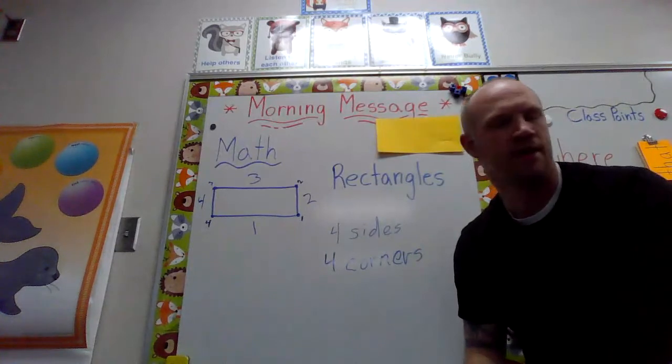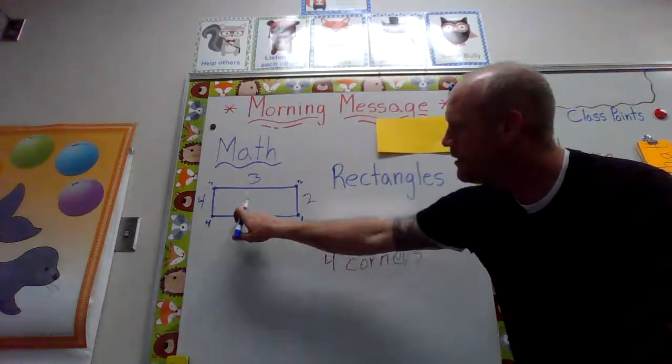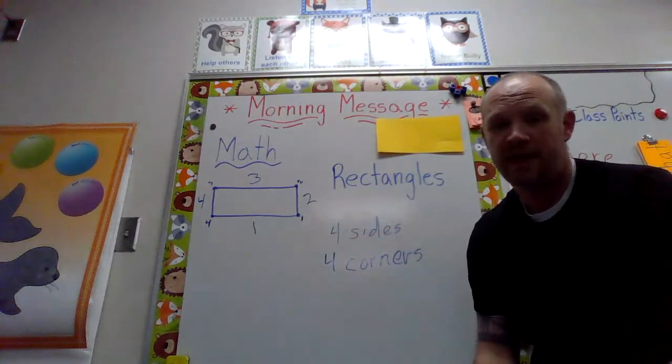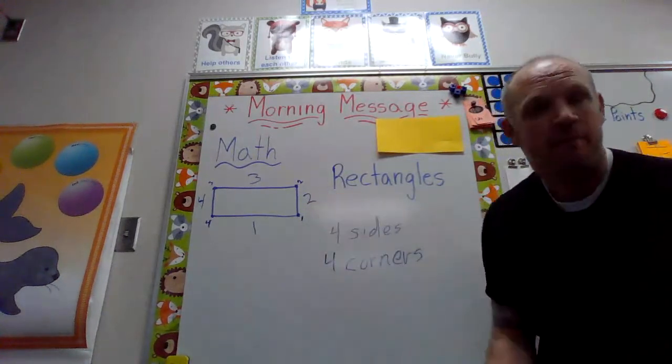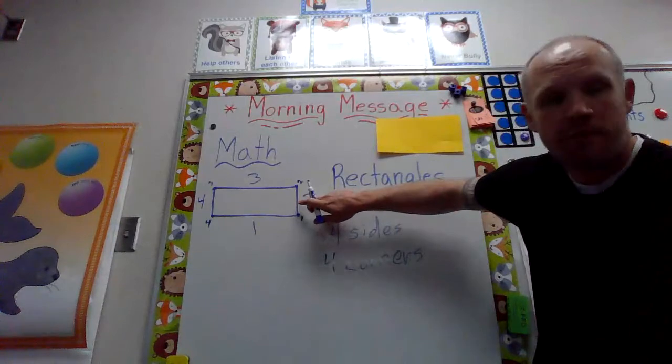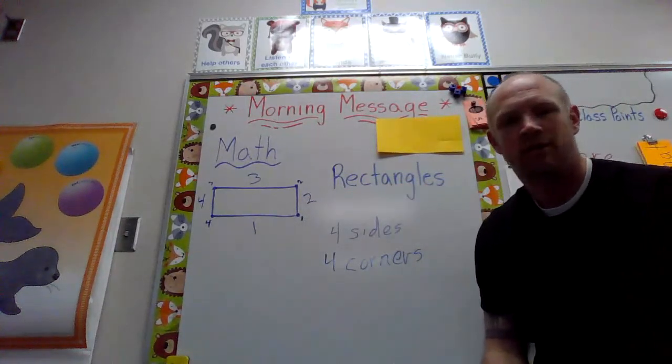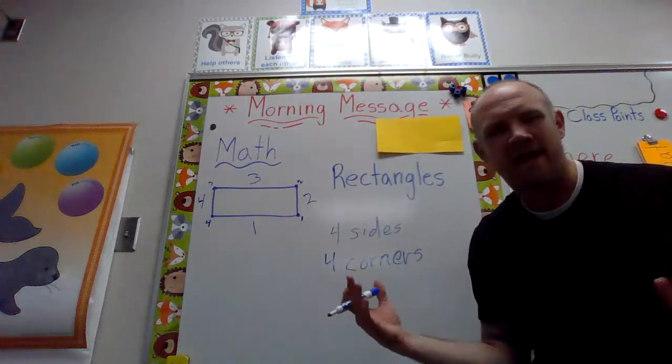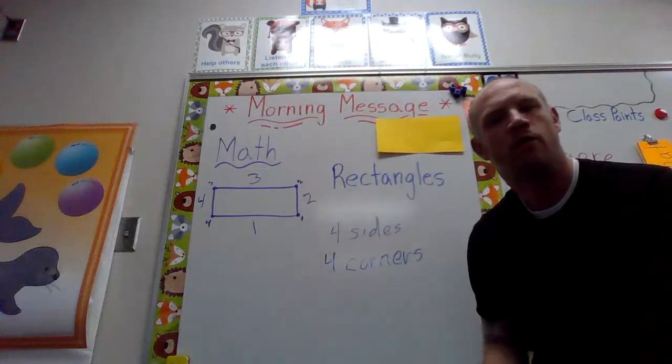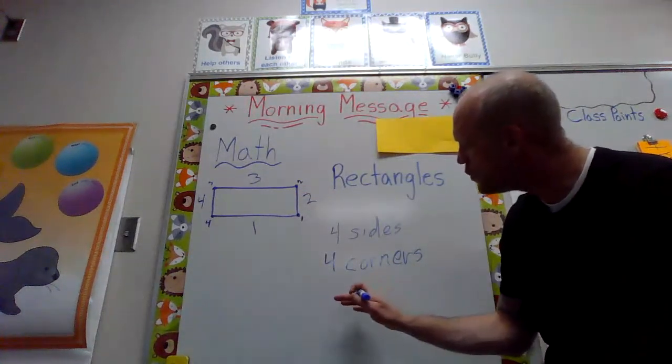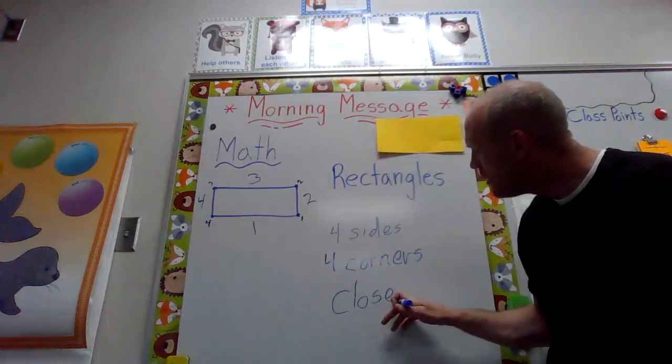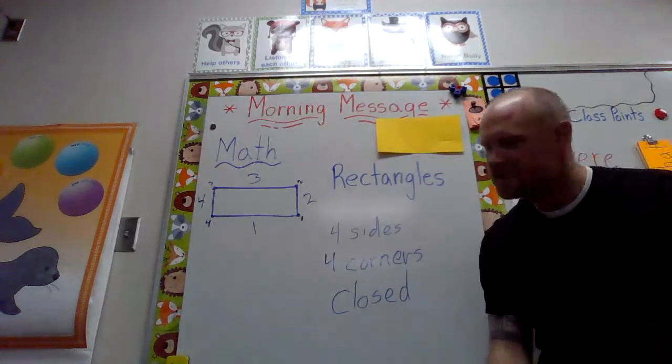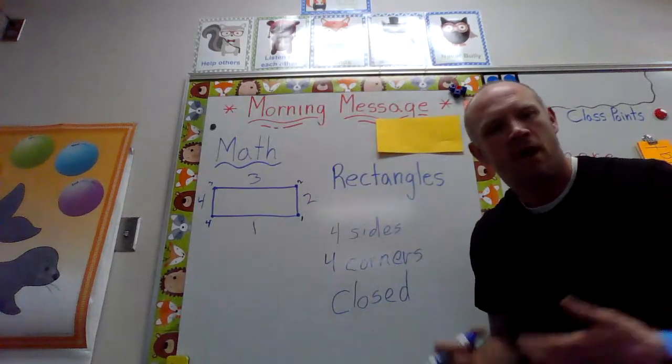Now just like our circle and our square and our triangle, our rectangle needs to be closed. Because what happens if it's open and one of those sides is not met? Who gets in there? Yeah, those ants get in there! So your rectangle needs to be closed.